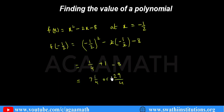I hope you all understood — finding the value of a polynomial is simply substituting the given value for the variable. We will see in the next class how to find the zeros of a polynomial — what a zero of a polynomial is and how to find it. If you have any queries or doubts, please email us at askagamath@gmail.com. Thank you for listening, bye.